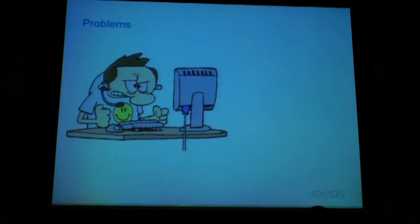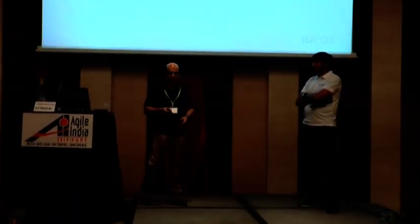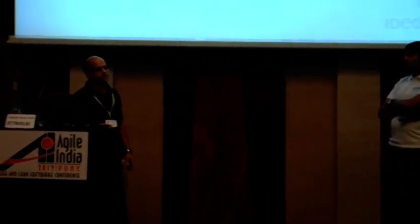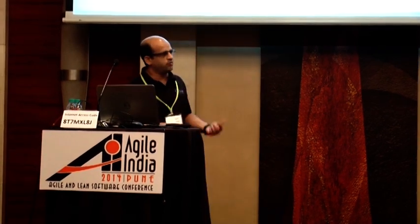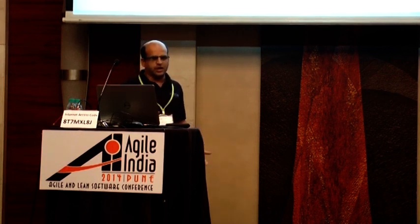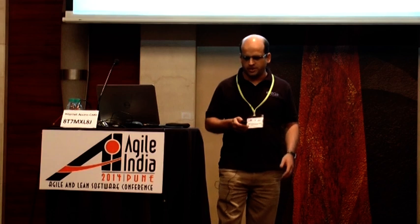For testers it was a miserable life. Every three months they had to manually test thousands of regression tests. Lots of end-to-end scenarios were getting tested in that last month of regression. Since it was not automated, they would encounter many cross-cutting issues in that final month. When those issues were found, it was a big frustration — developers would fix them, deliver a new release, and testers would repeat the entire regression. A lot of regression testing, pretty frustrating.